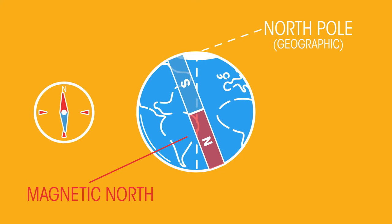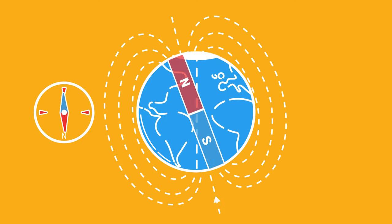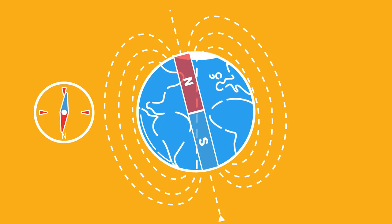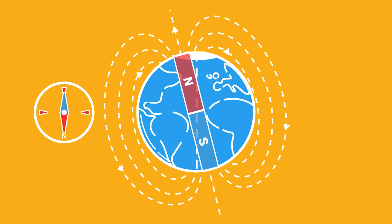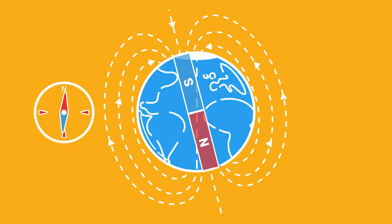However, unlike any ordinary magnet, the magnetic Earth's poles can switch. So the north pole becomes the south and the south pole becomes the north. This pole reversal has actually happened many times before and is likely to happen again soon.